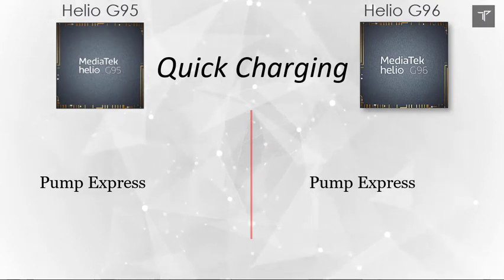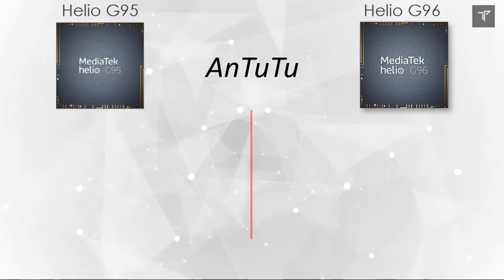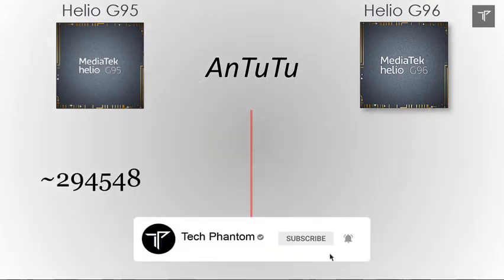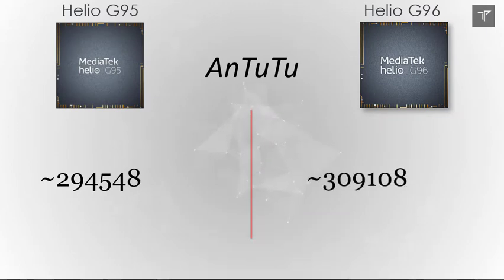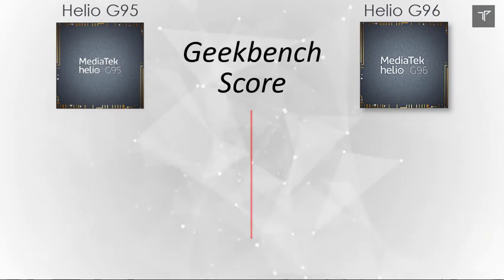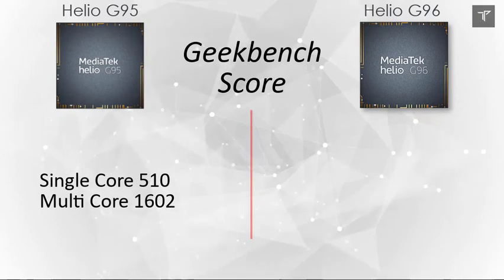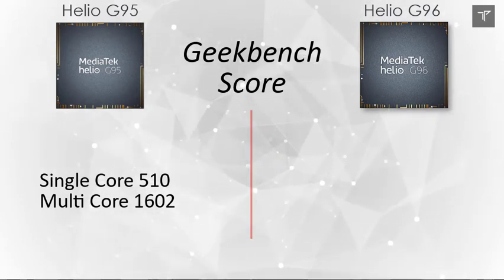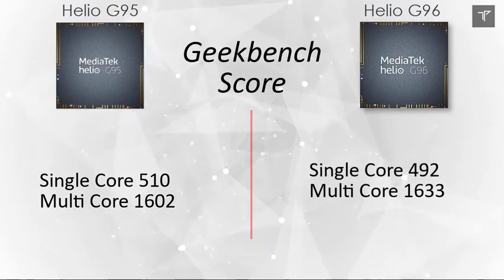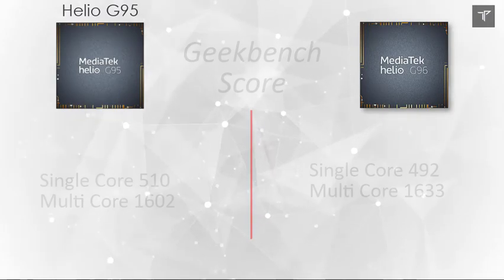On benchmark scores, the Helio G95 achieves approximately 294,000 on AnTuTu, while the Helio G96 scores around 309,000. On Geekbench, scores are nearly identical: the G95 achieves a single-core score of 510 and multi-core of 1600, while the G96 scores 492 single-core and 1633 multi-core.